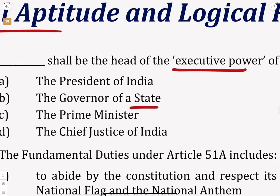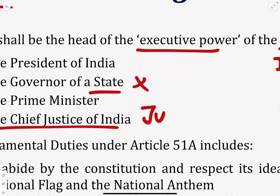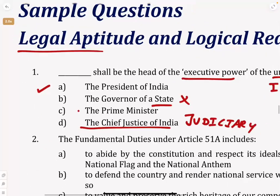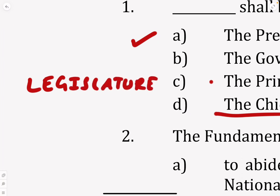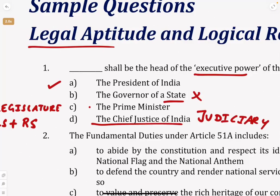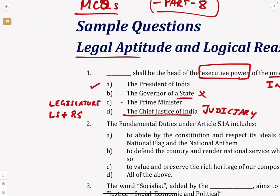It is not the Governor of a state, because the state is only for one particular state, not for the whole of India. The Chief Justice of India is for the judiciary — he is the head of the judiciary. The President of India is the executive power. Is it the Prime Minister? No. The Prime Minister is the head of the legislature — that is the Lok Sabha and Rajya Sabha together, the upper house and lower house. The lower house is Lok Sabha, the upper house is Rajya Sabha. That is the representative of the people, and the Prime Minister is the head of the legislature. But the executive power of the union of India is the President of India. So the answer is President of India for this MCQ.